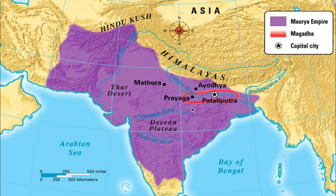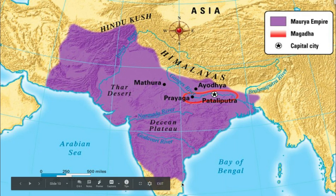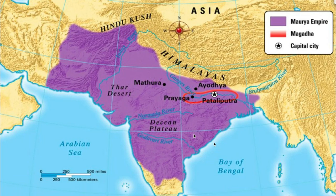The Magadha kingdom is shown in red — that's where Chandragupta began, his initial kingdom. And he eventually expanded through conquest almost the entire subcontinent, as you can see based on the map.